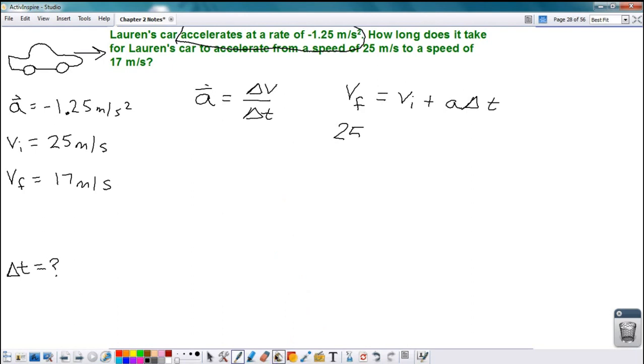The final velocity is 17. So 17 meters per second equals the initial 25 meters per second plus the acceleration, -1.25 meters per second squared, times the change in time.